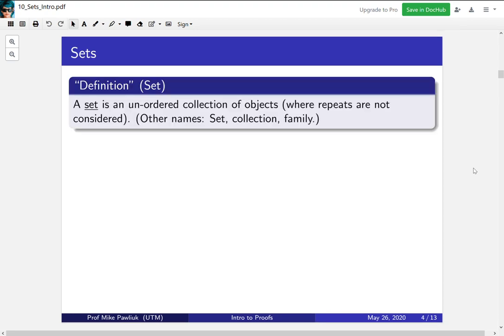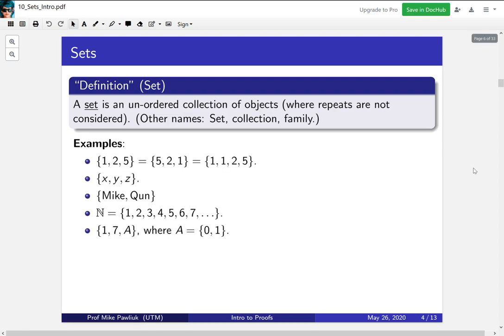Let's start with a definition in scare quotes, because this isn't a formal definition. A set is an unordered collection of objects where repeats are not considered. Sometimes we call sets collections or families. Here are some examples. The set {1, 2, 5} is the same as the set {5, 2, 1}, and it's the same as the set {1, 1, 2, 5}. In the first part, we don't care about the order, and in the second part, we don't care about repeats. So all three of those sets really are just one set.